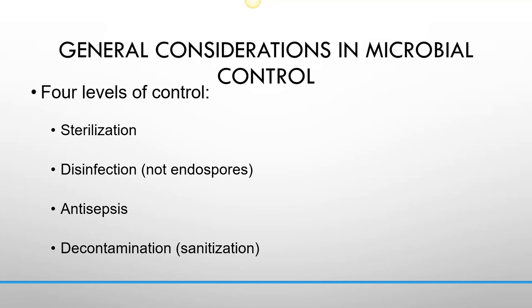Antisepsis is a decrease in microbial numbers on living tissue. Decontamination or sanitization has to do with reducing microbial numbers to a public health standard, usually set by food processing plants or healthcare facilities. They culture the environment and enumerate — count — the number of microorganisms growing on a particular surface. If that number is higher than the standard, you have to go back and disinfect again. So with decontamination, you are decreasing microbial numbers down to an acceptable level, and what is acceptable is determined by the facility setting the standard.